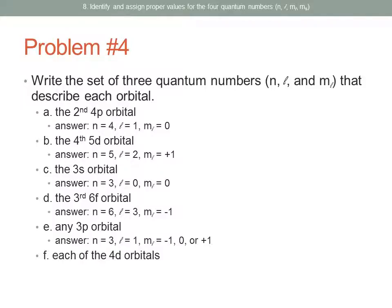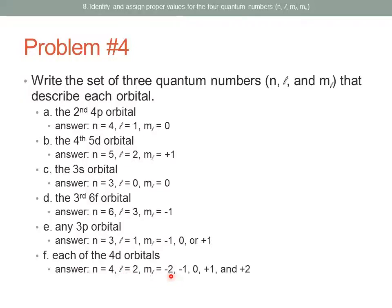For each of the 4D orbitals: N equals 4 because we are in the fourth energy level, and L equals 2 because it is a D sublevel. M_sub_L would correspond to all five values from negative 2 up to positive 2 — that is, negative 2, negative 1, 0, positive 1, and positive 2 — because we are asked for each of the 4D orbitals.